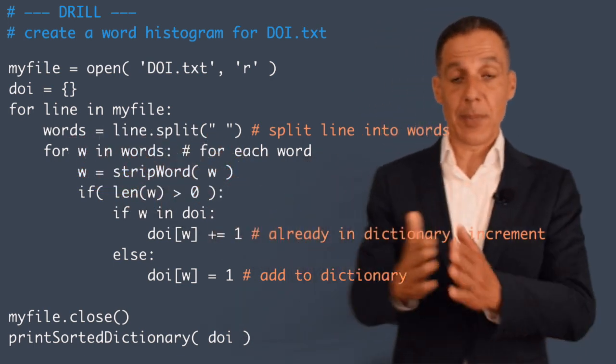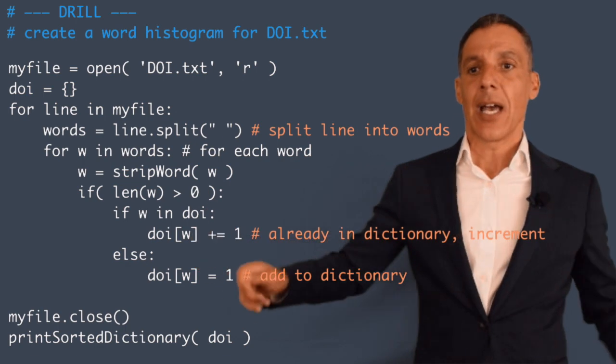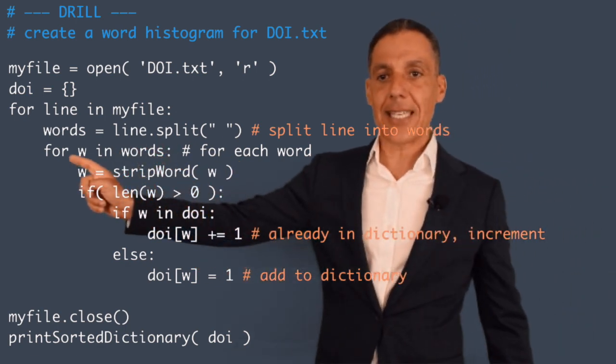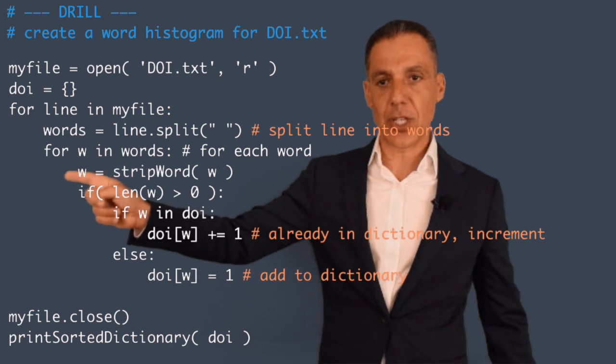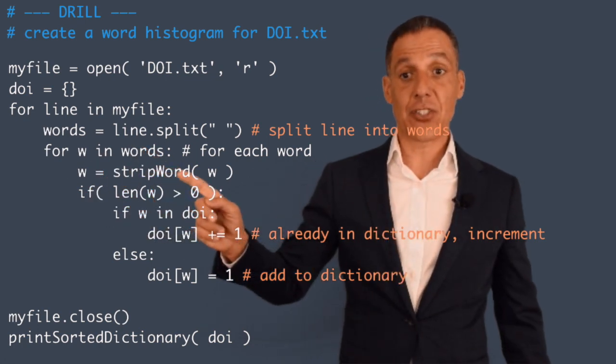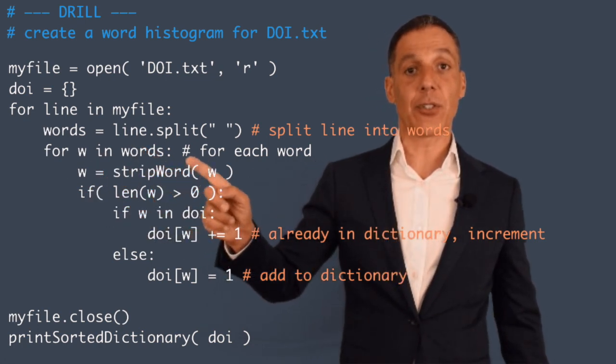So words now is going to be an array of words. I'm going to take each of the words in that array, so for W in words. I'm going to strip out the punctuation and convert to lowercase.